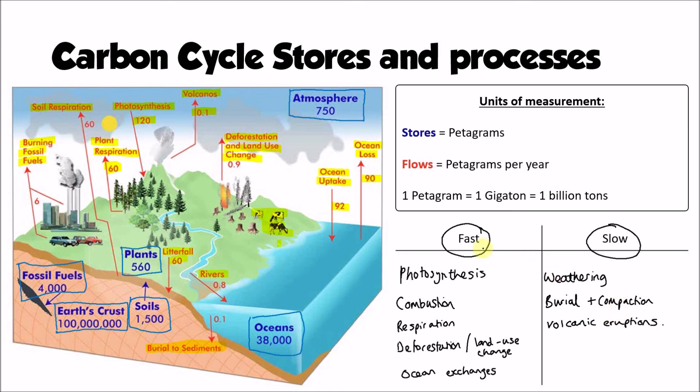So we can almost see the Earth as having two carbon cycles rather than one. Although they are connected, the fast carbon cycle is having a much more dramatic effect in the short term in terms of changing the size of some of those stores of carbon. Things like the slow carbon cycle, weathering and burial and compaction and volcanic eruptions, they are returning and moving carbon much, much more slowly.